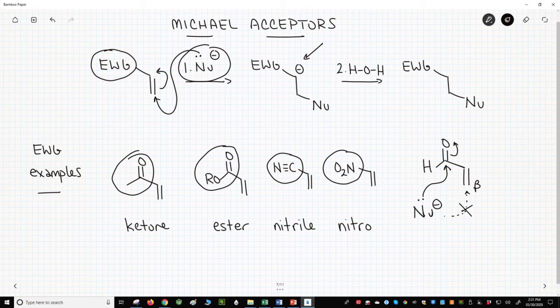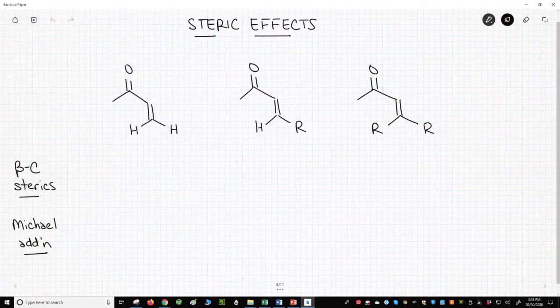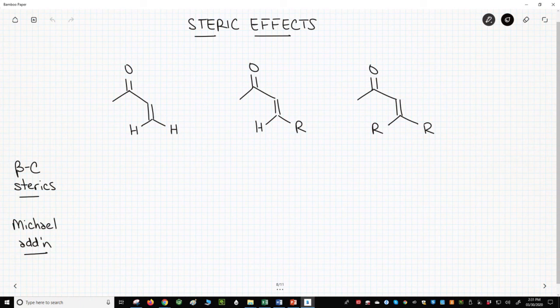Let's see another factor for the Michael addition: steric effects. On the screen are three alpha-beta unsaturated ketones. For these Michael acceptors, we do have an electron withdrawing group—it's the ketone carbonyl. What's changing on these compounds is the substitution about the beta carbon.